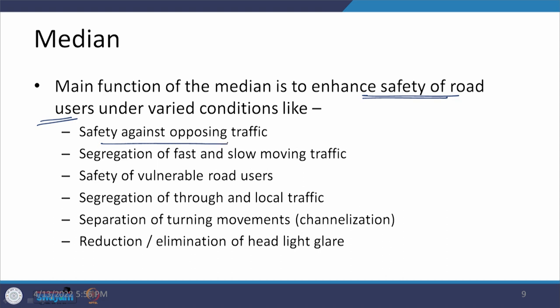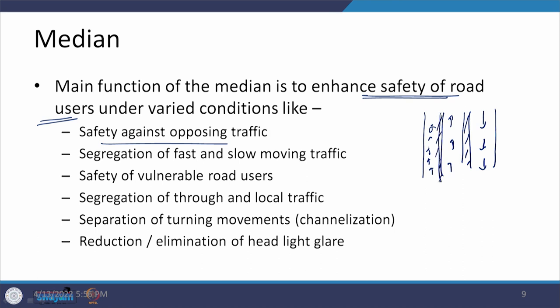The very first safety function is prevention of head-on collisions. When a median is provided in the center of the road, traffic moving in one direction on one carriageway and the opposite direction on the other — there is no possibility of a head-on collision. Another function is segregation of fast and slow moving traffic. If slow-moving traffic is substantial, we can provide a separate lane and provide a median on that side as well. Safety of vulnerable road users such as pedestrians is also addressed.